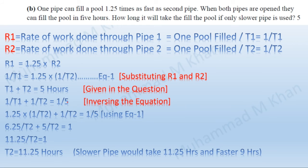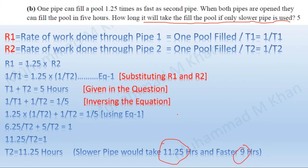Solving mathematically, 2.25/t2 = 1/5, so t2 = 11.25 hours. Solving for t1 gives the answer 9 hours. The question asks how long it will take to fill the pool if only the slower pipe is used. The slower pipe takes the longer time, denoted by t2, so the answer is 11.25 hours.